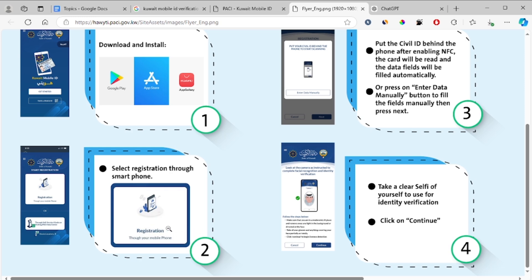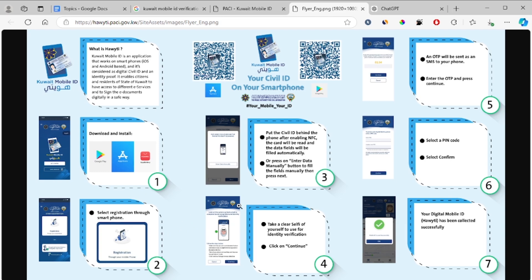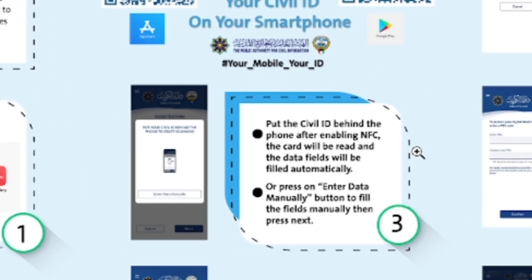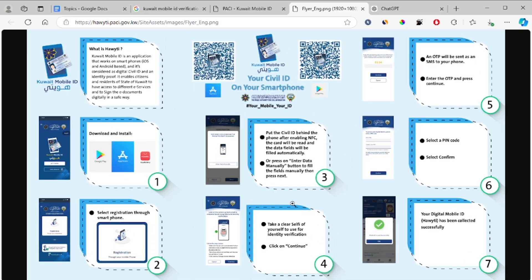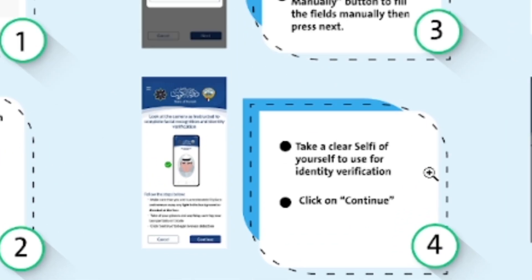To register, put the civil ID behind the phone after enabling NFC. The card will be read and data fields will be filled automatically. Alternatively, press the 'Enter Data Manually' button to fill the fields manually, then press next. After that, take a clear selfie of yourself to use for identity verification.